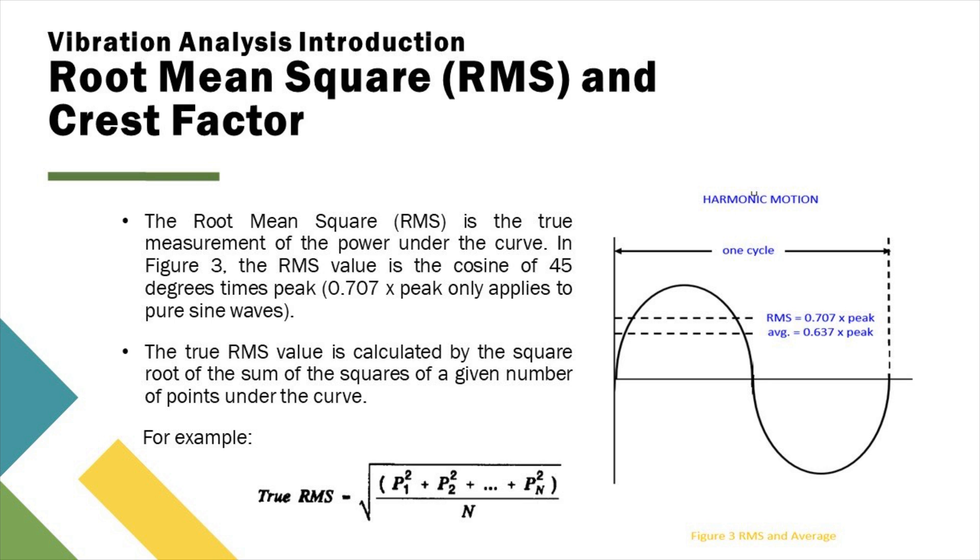The true RMS value is calculated by the square root of the sum of the squares of a given number of points under the curve.